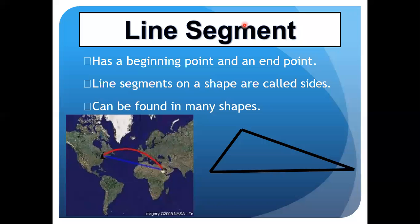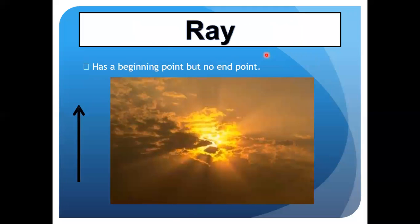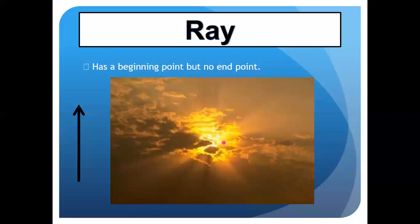Now the next slide is about a ray. A ray has a beginning point but no end point. You can see the example with the arrow on screen — there is a starting point but no ending. The best example is the rays of the sun or moon — light rays have a starting point but no end point.